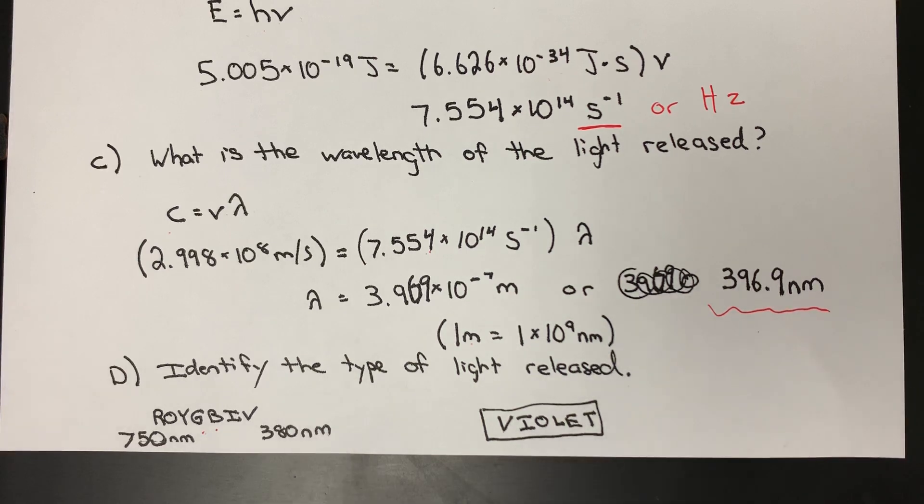So if we're at 396.9, I guess we don't have a definitive scale here. But in all likelihood, we're probably going to be talking about violet light. Thanks, guys.